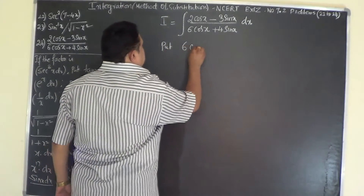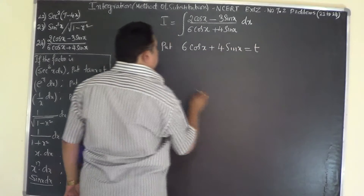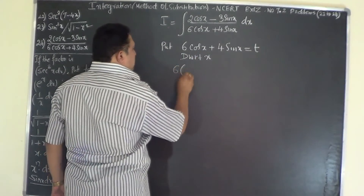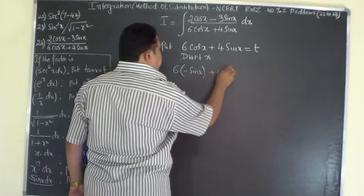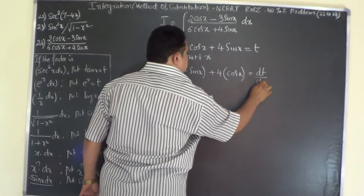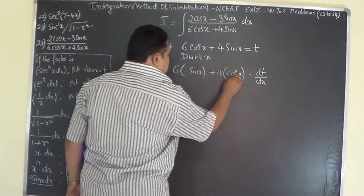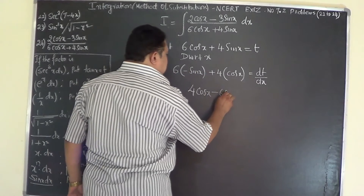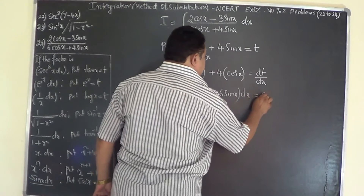Put 6cosx + 4sinx = t. Differentiating with respect to x: 6 × (-sinx) + 4 × cosx = dt/dx, which gives 4cosx - 6sinx and cross-multiplying dx to the left side: (4cosx - 6sinx) dx = dt.